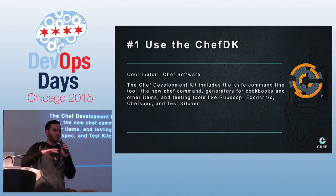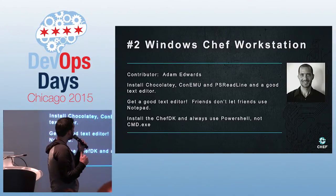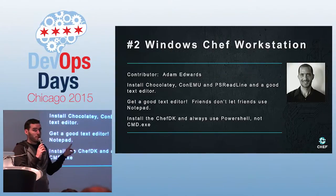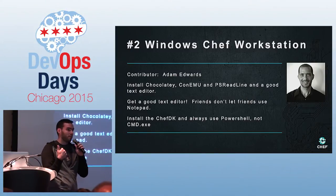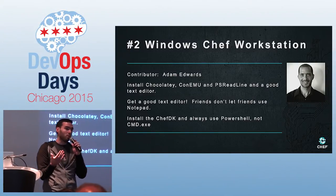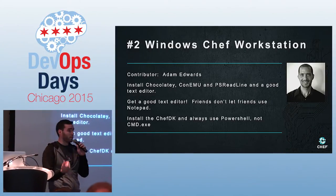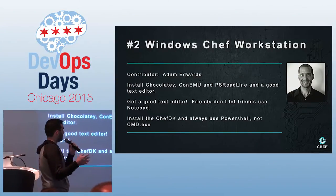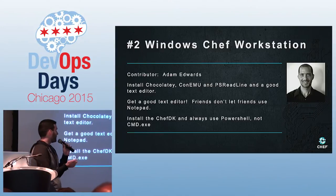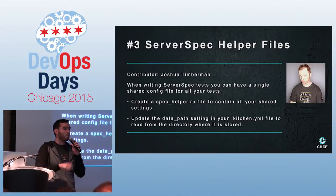If you've ever tried to set up a workstation, you know you have a gem file that's like a million lines long, and at least 50 of those cause unhappiness. Specifically with a Windows workstation, you want to install Chocolatey, ConEmu, and PSReadLine. Chocolatey is a package manager for Windows, much like Homebrew, Apt, or Yum. ConEmu is a console emulator you can use as an alternative to your native console. And get a good text editor — friends don't let friends use Notepad or Microsoft Word.